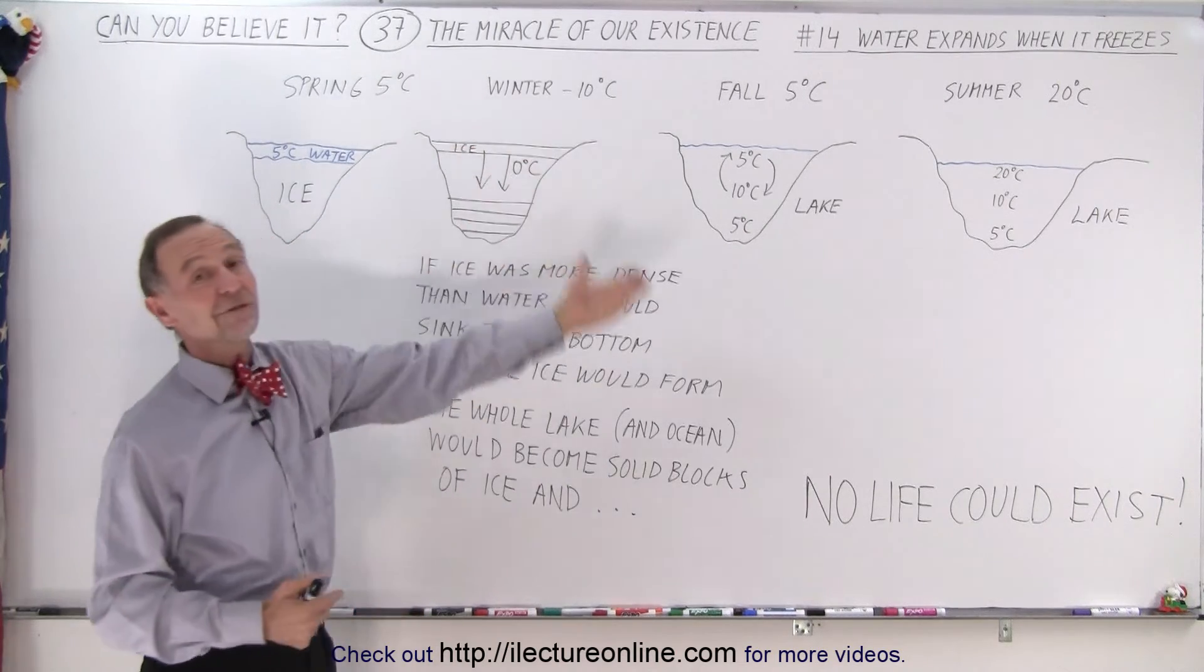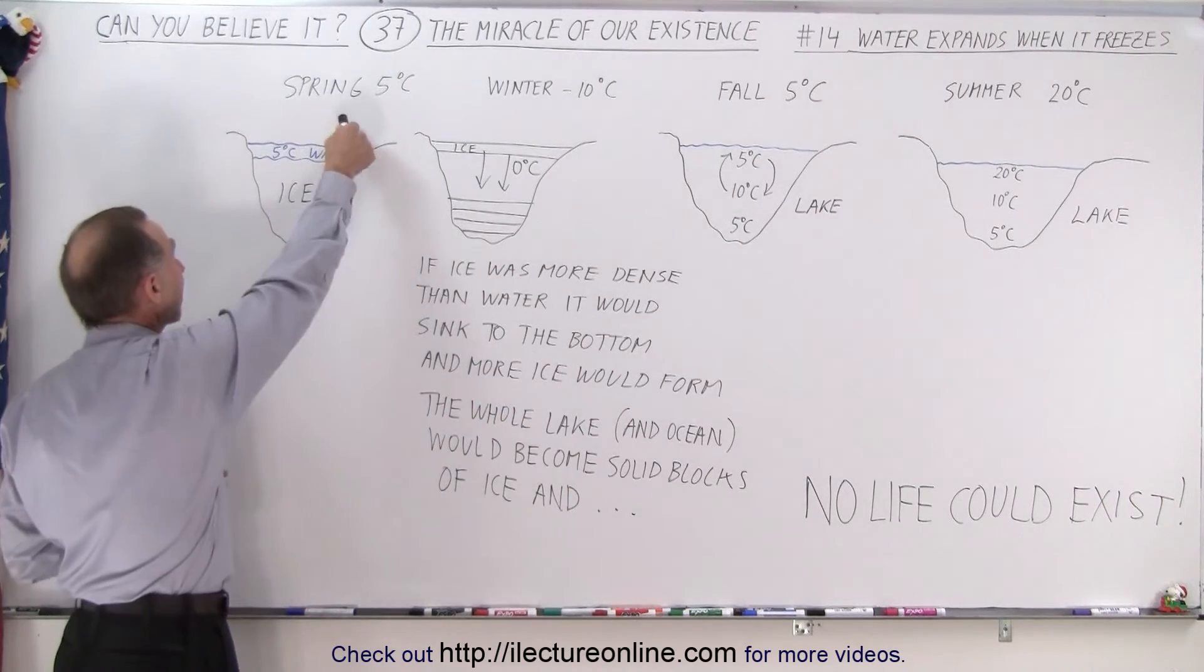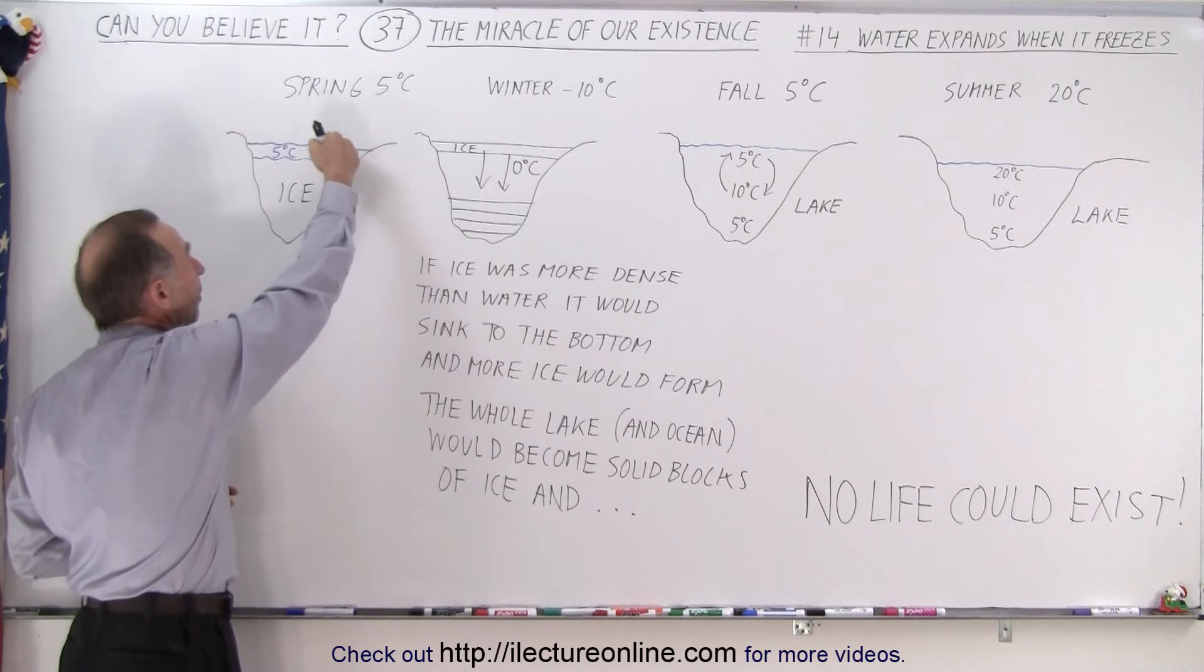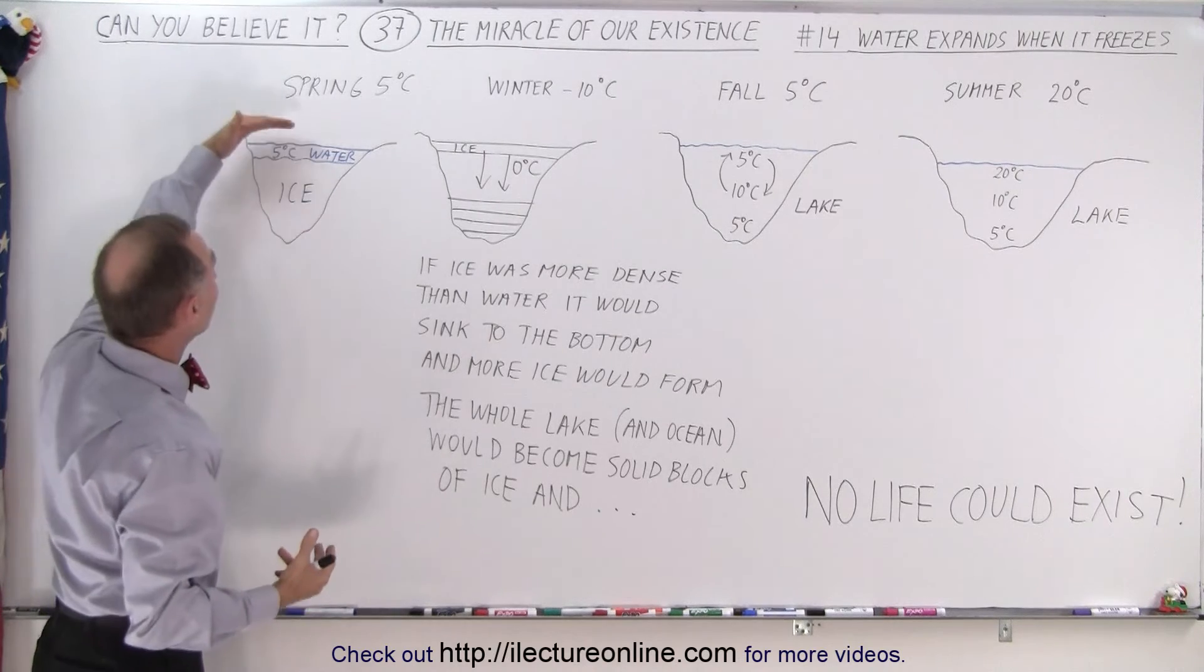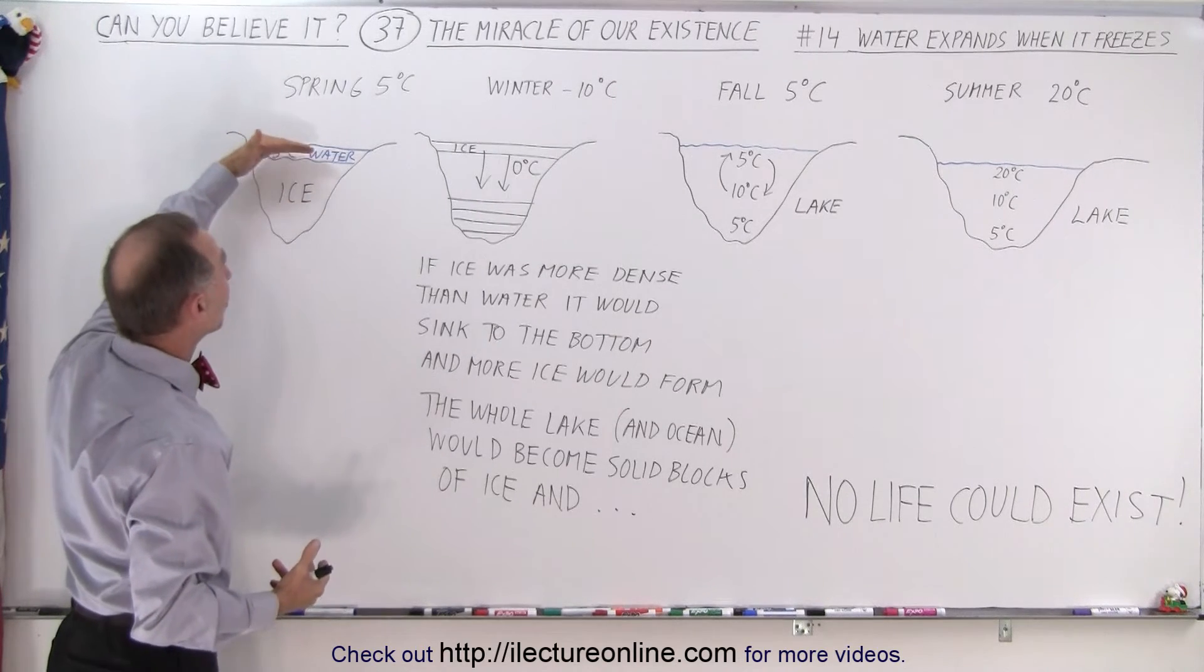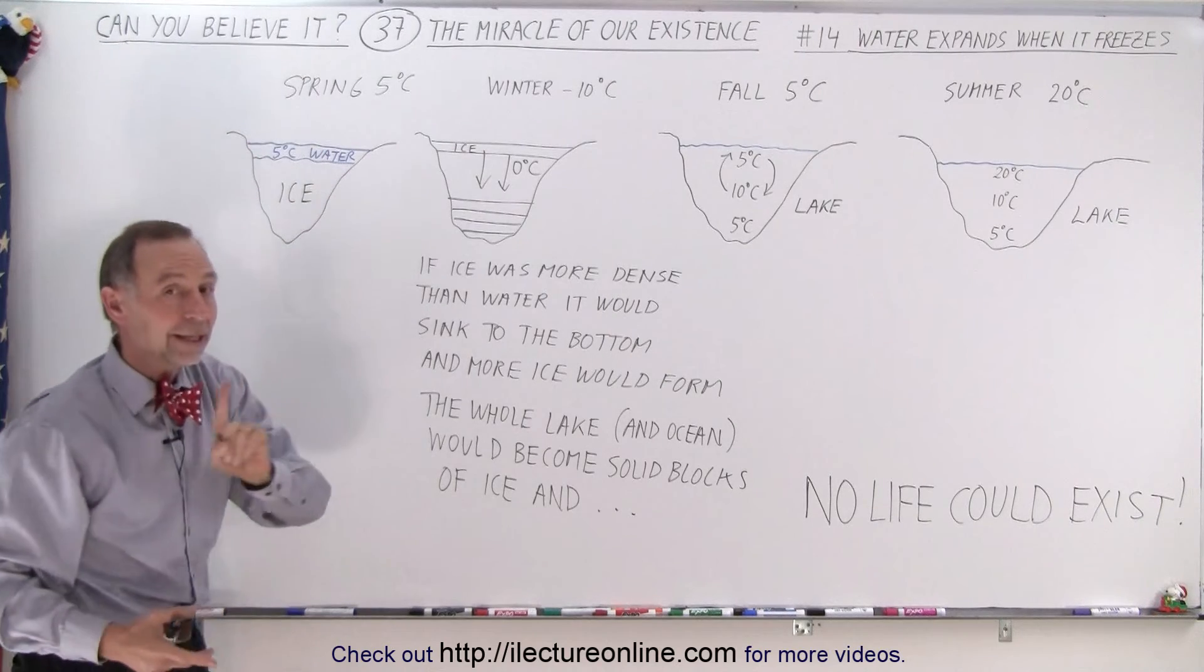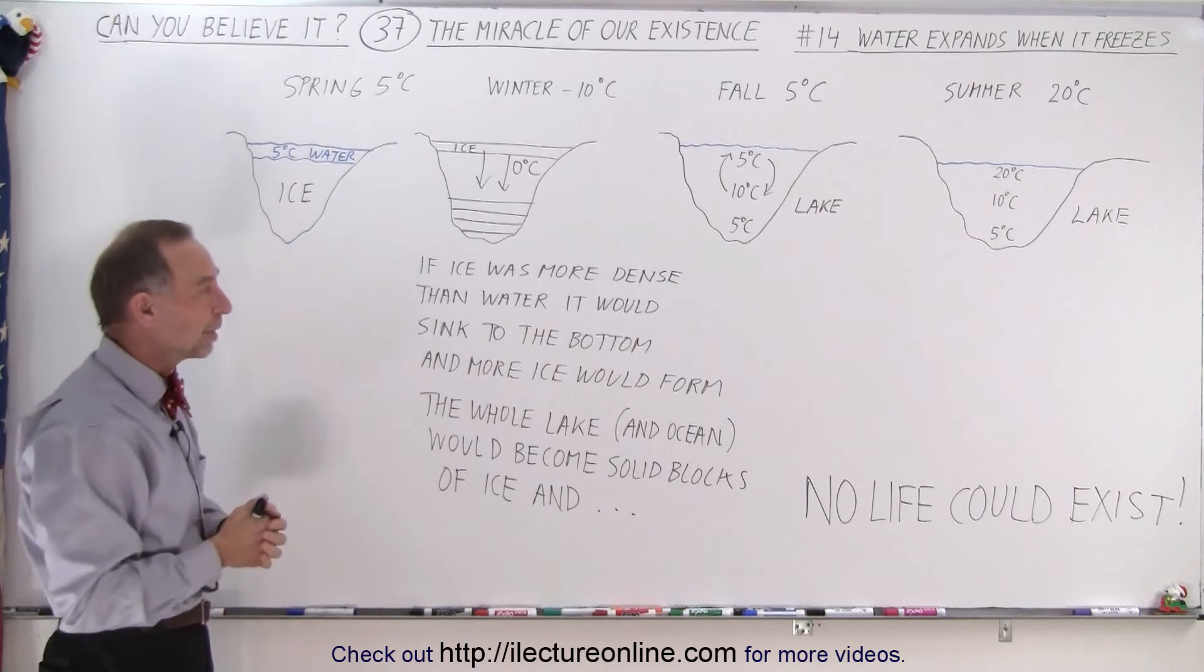Spring would come, it would get warmer, the ice at the very top would melt and turn back into water. But below that you'd have this huge block of ice that would never melt because the heat simply can't get there. Warmer water is less dense than ice and it would then stay on top. Again, that would be the case if water and ice didn't have that very special property.